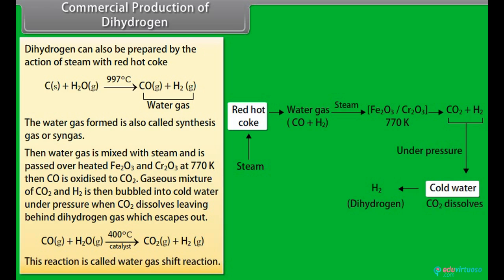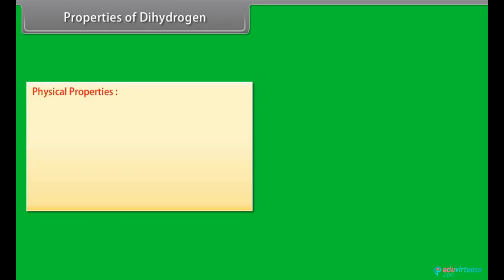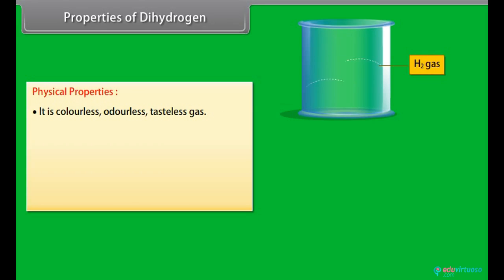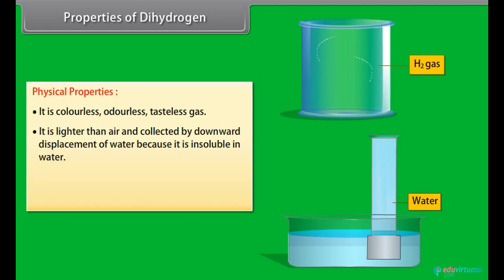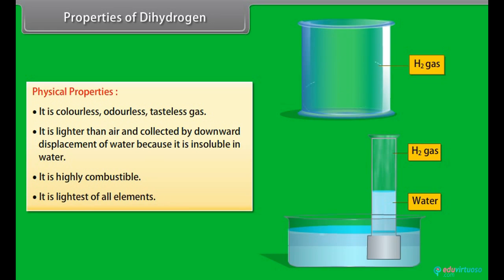Physical properties of dihydrogen: It is colorless, odorless, tasteless gas. It is lighter than air and collected by downward displacement of water because it is insoluble in water. It is highly combustible. It is the lightest of all elements.